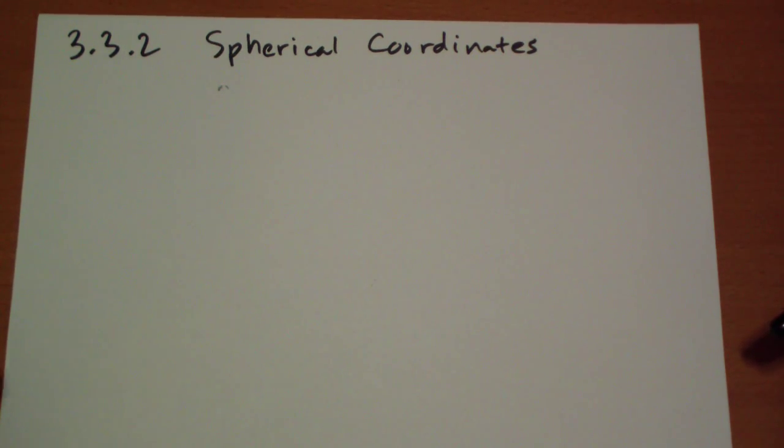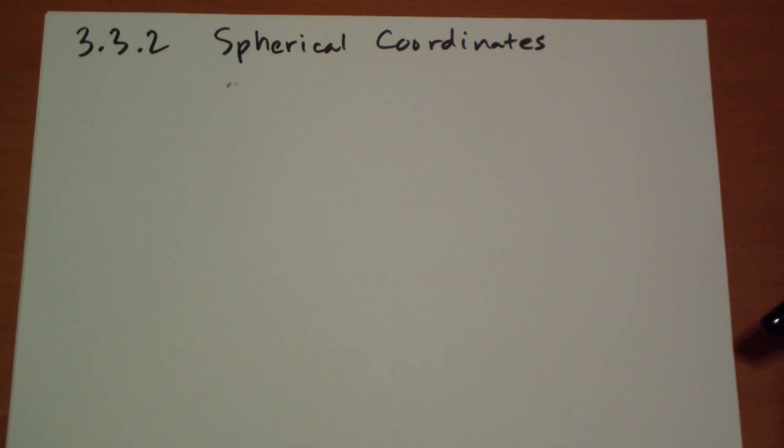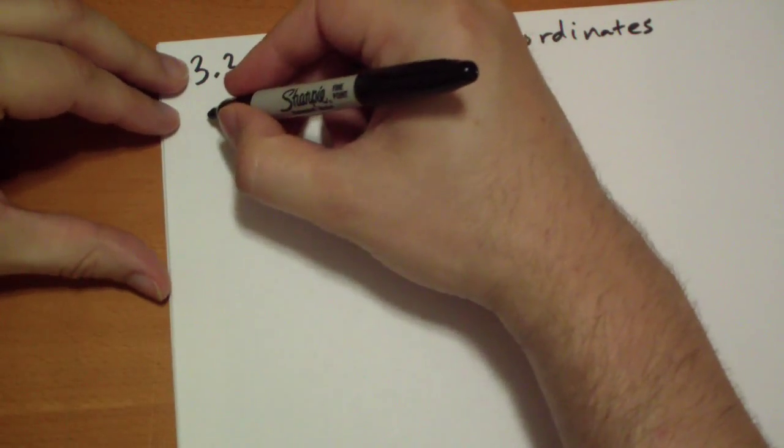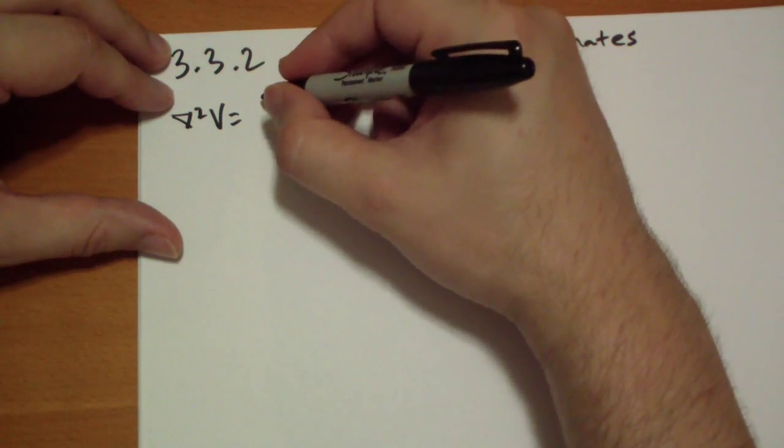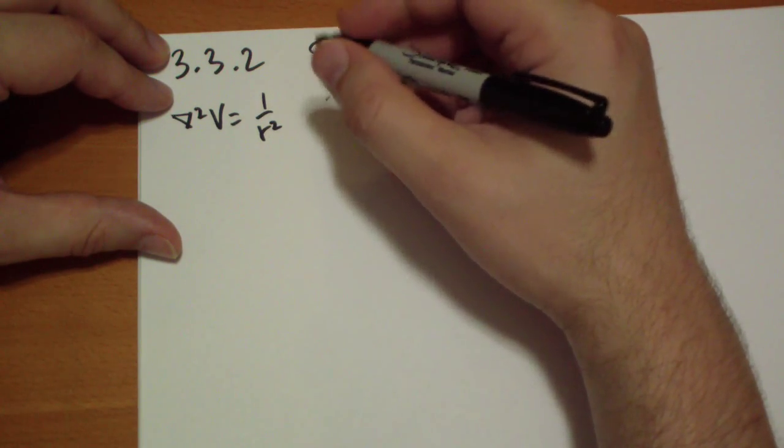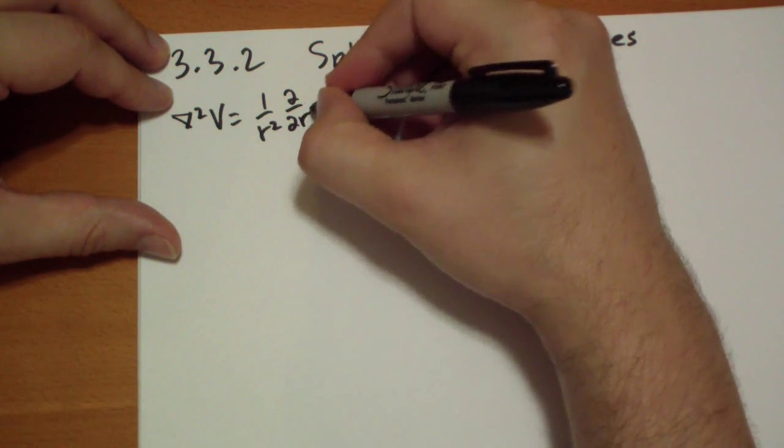When you tackle spherical coordinates, it's not impossible. Just take it piecemeal, bit by bit. The Laplacian in spherical coordinates is not anything like the Laplacian in Cartesian coordinates. So this is what it is. Let me write it out for you. You can find this on the inside cover of your book too.